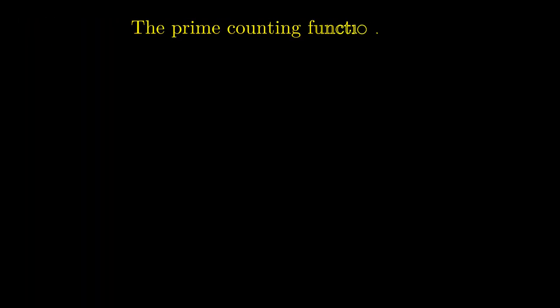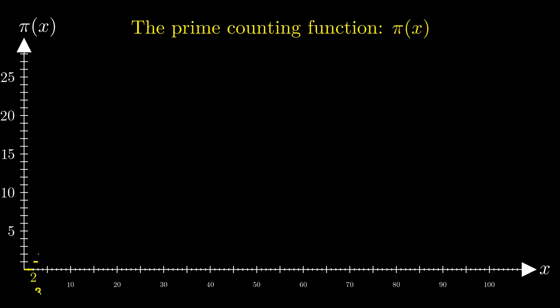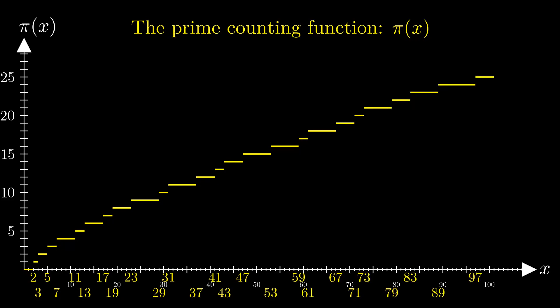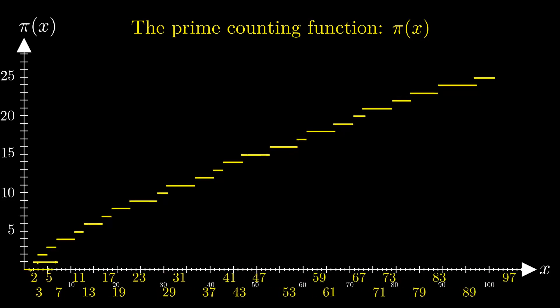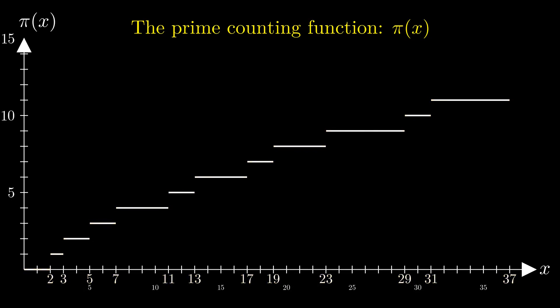Now the stage is prepared to present the connection between the primes and zeta. First we need to express the appearance of primes in terms of a function. This is the prime counting function labeled with a small pi that always increases by one whenever a prime is encountered. In other words, it returns the number of primes up to a given value of x. For instance, pi of 100 is 25 since there are 25 primes smaller than 100.